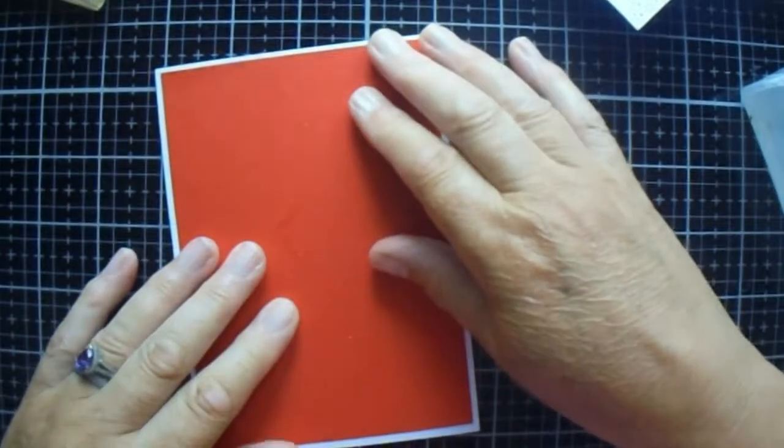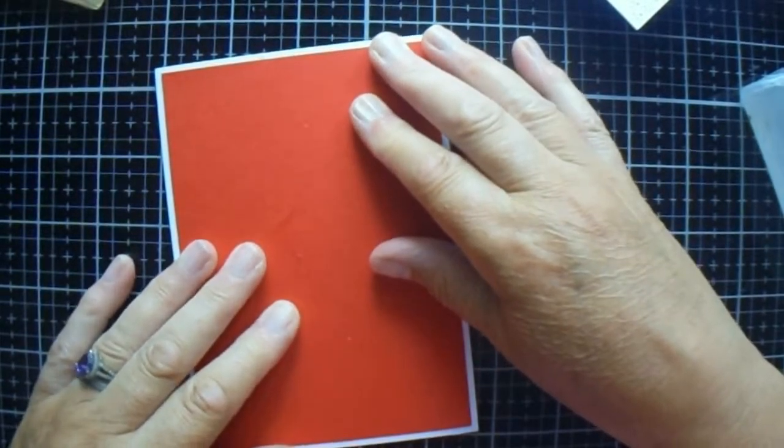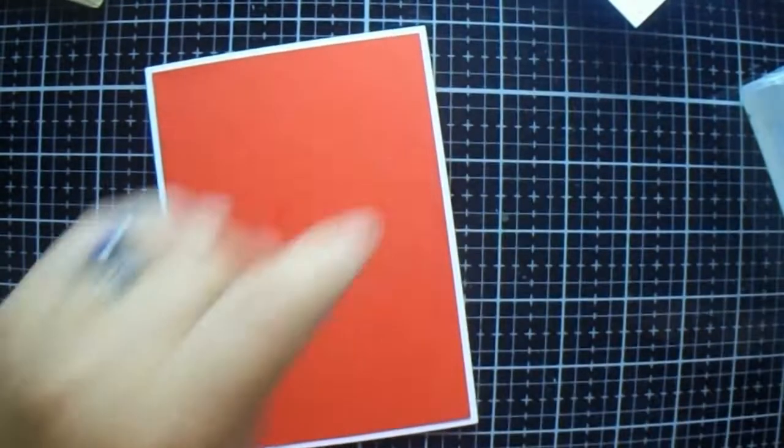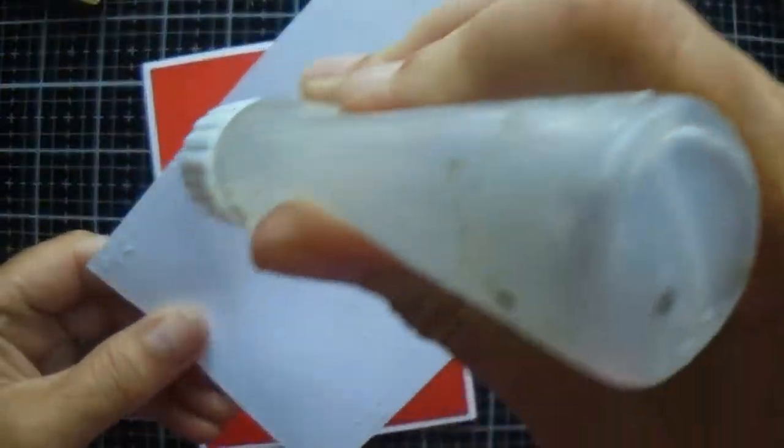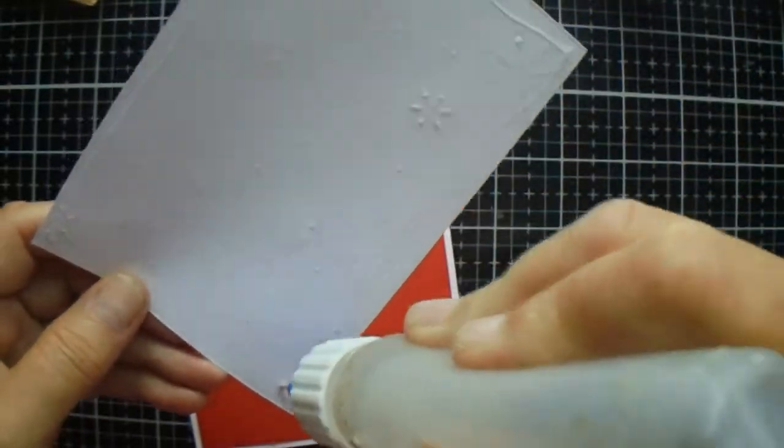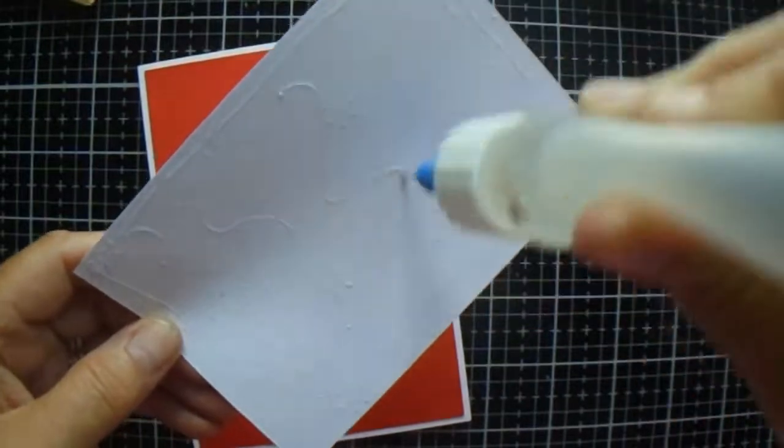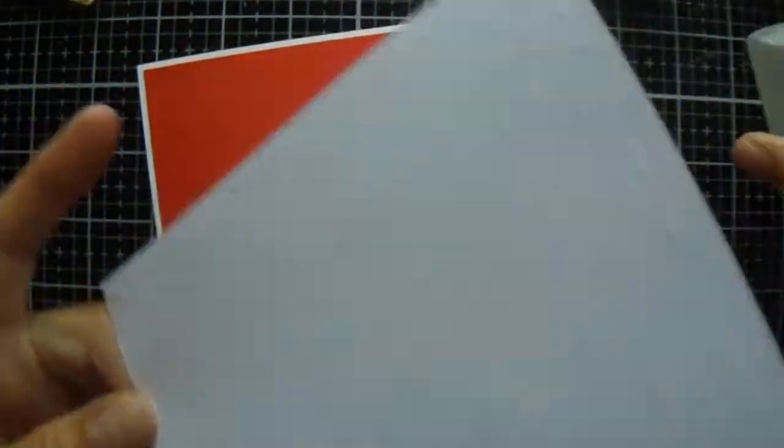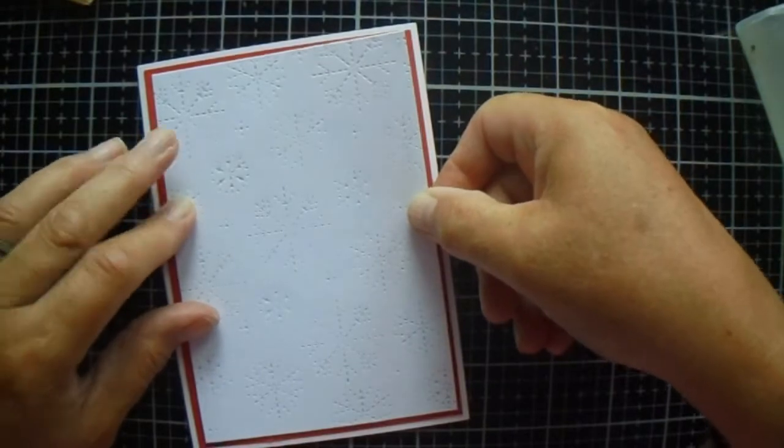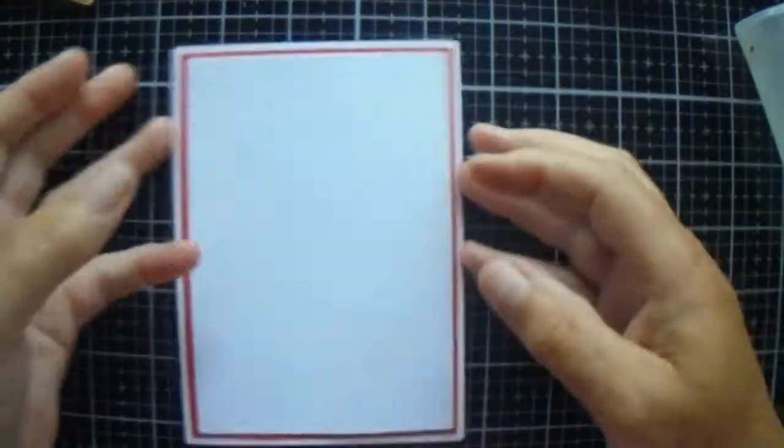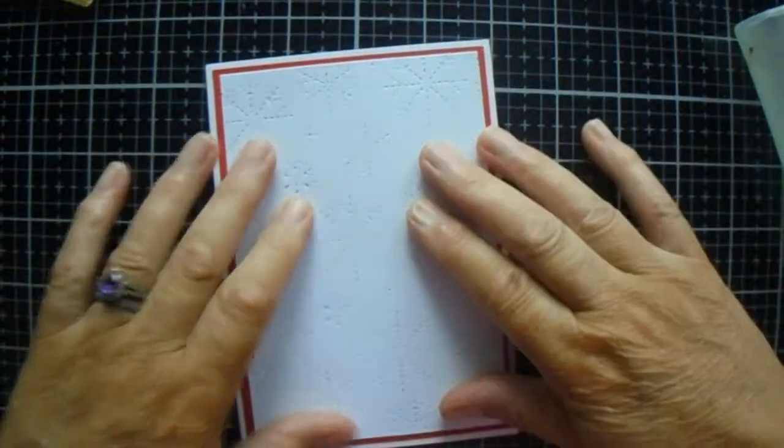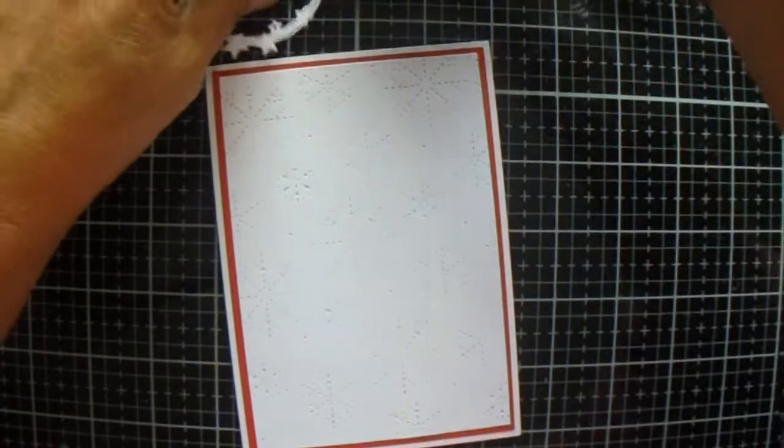This bit will be 3 and three quarters by 5 and three eighths. So the red is 4 by 5 and five eighths, and this is 3 and three quarters by 5 and three eighths, and there we have our perfect layers.